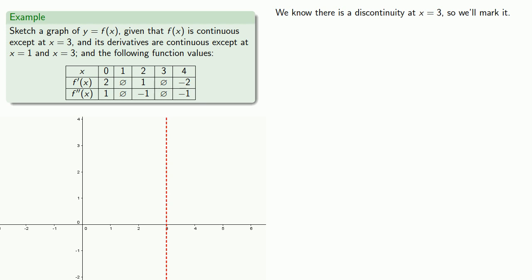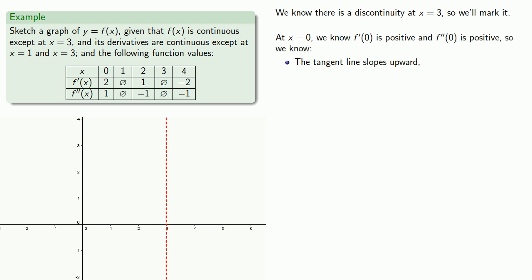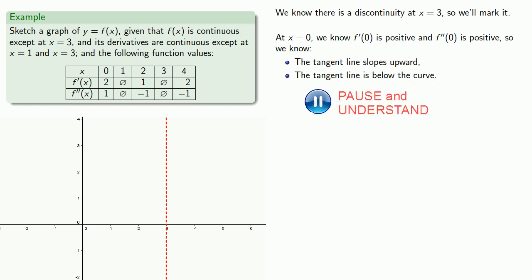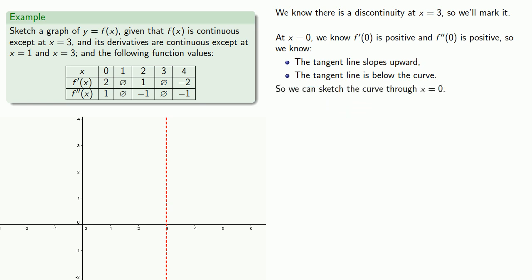At x equals 0, we know the value of the first derivative and the second derivative. We know that the first derivative is positive, so the tangent line slopes upward. And we know that the second derivative is positive, so the tangent line is below the curve. We can sketch a portion of the curve running through x equals 0, though the vertical position of this point will need to be adjusted at the end.